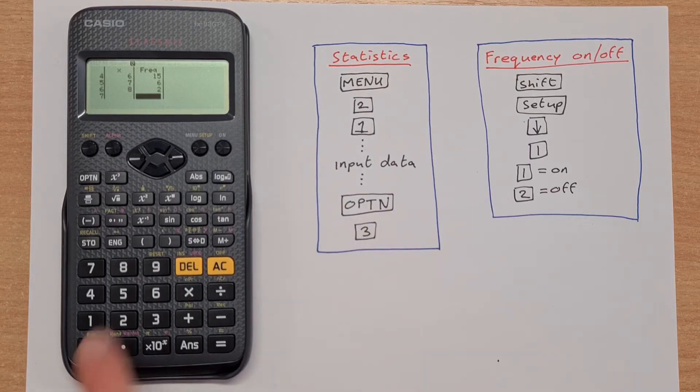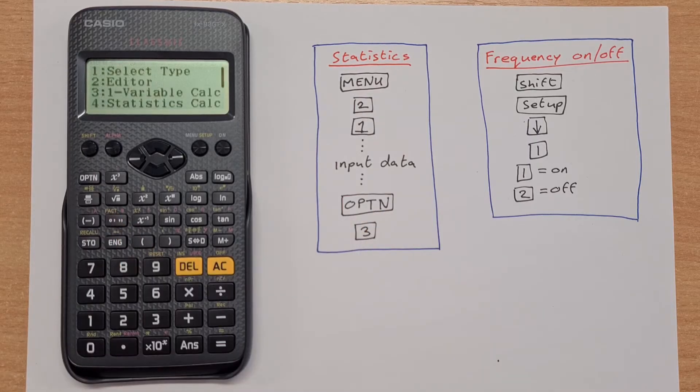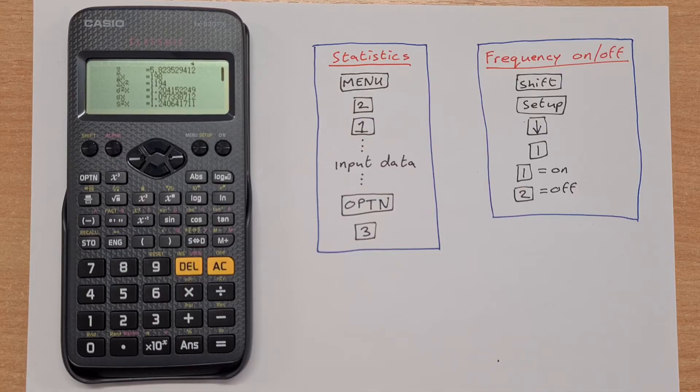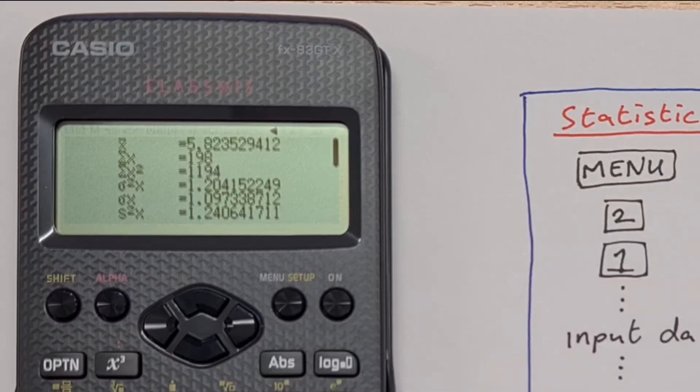The next thing I do is very easy. I just press options and I press 3, which is the 1 minus variable calculations. So I press 3 and this brings up this menu here. And you can see that now I have everything that I need here in this menu.